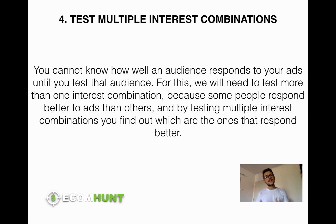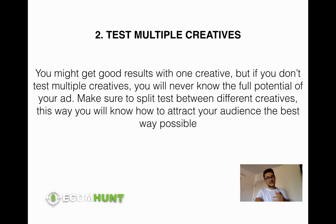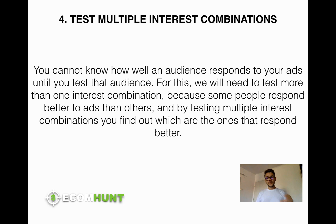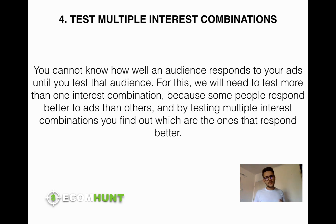Number four: test multiple interest combinations. This is the same principle as testing multiple creatives — you've got to do the same thing with interests. You don't want to only test one single interest because there are a lot of people left out. You want to split test many interests and know which ones are responding better to your ads. Some audiences will have big click-through rates; others won't respond well. That's the only way to know which interests to target for that product.